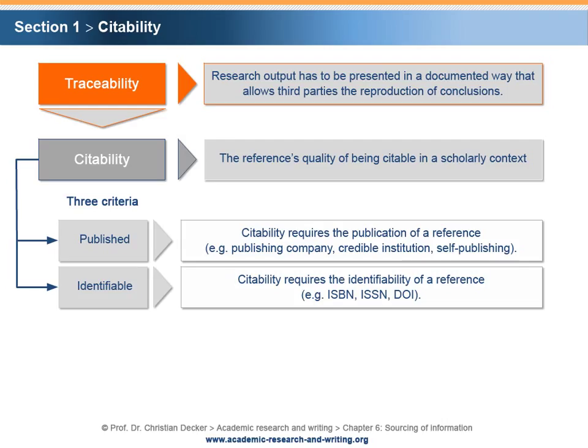ISBN stands for International Standard Book Number and is used for the identification of books. ISSN stands for International Standard Serial Number and is used for the identification of journals and serials. DOI stands for Digital Object Identifier and is used for the identification of electronic documents.